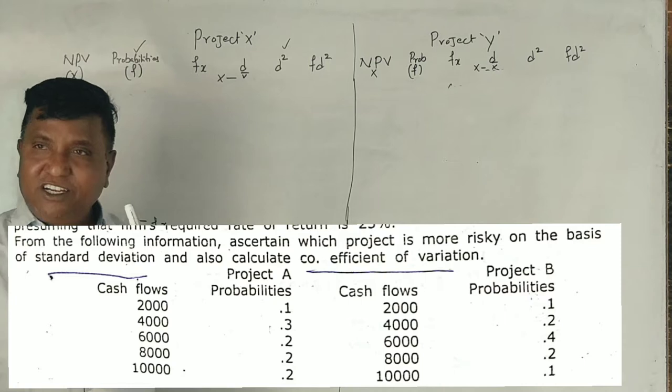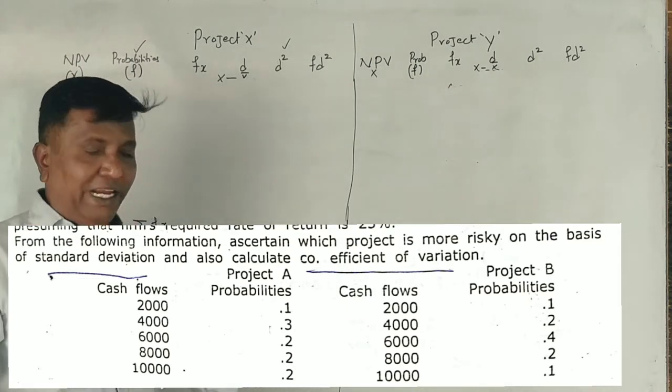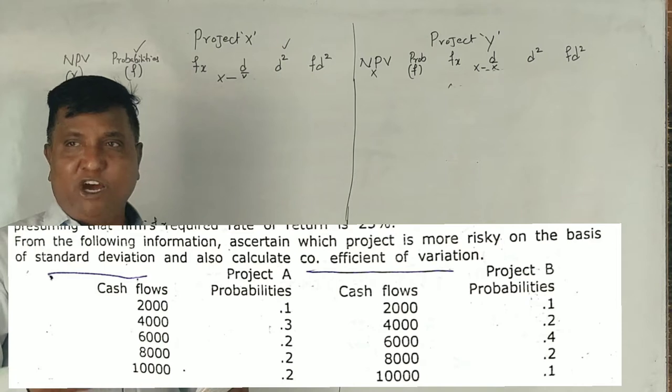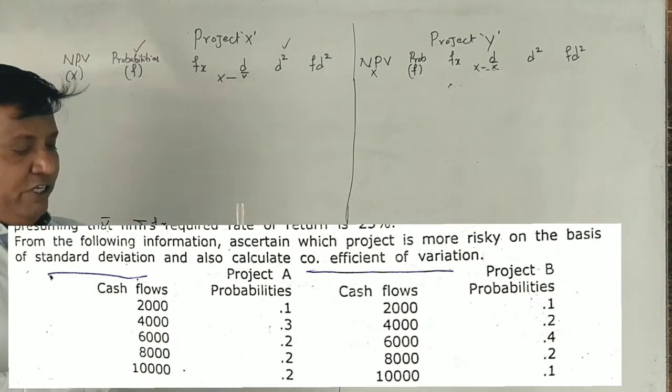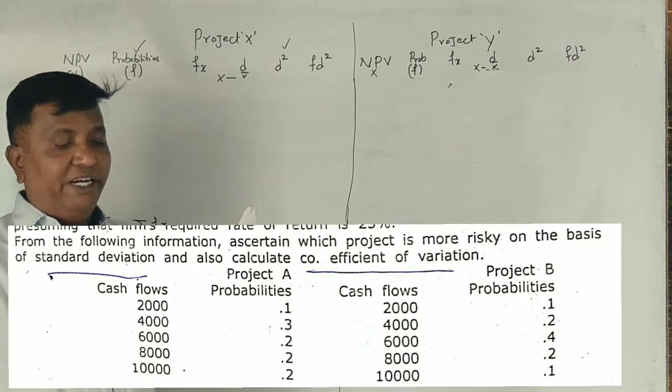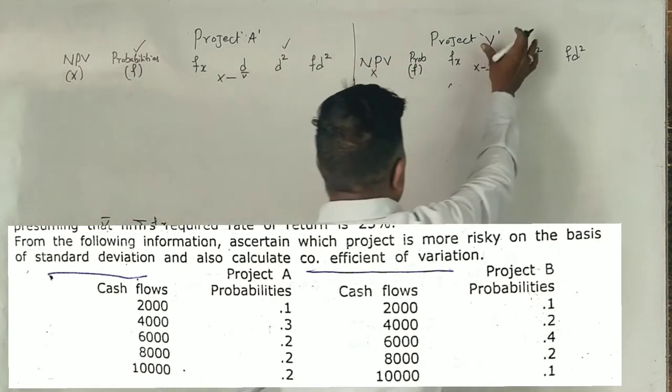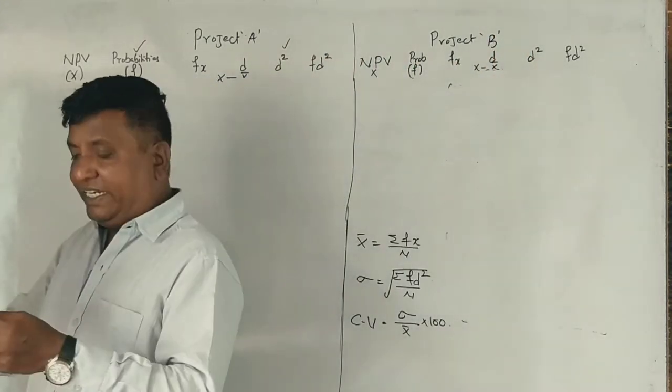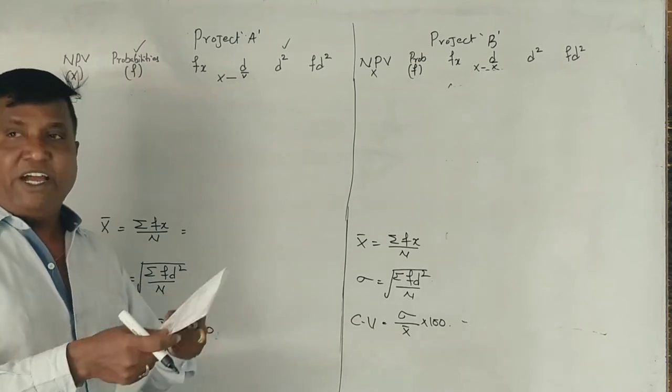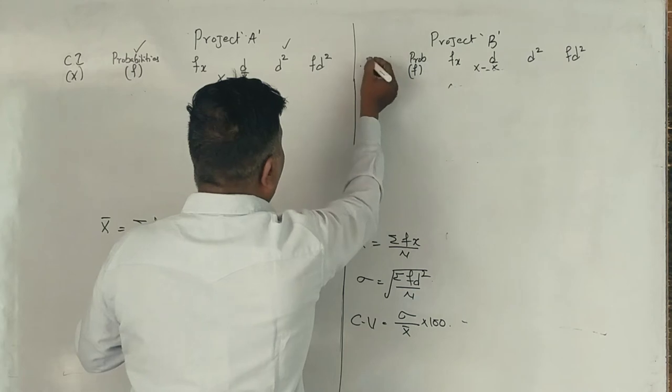Investment decisions and risk analysis using standard deviation and coefficient of variation. From the following information, ascertain which project is more risky based on standard deviation and coefficient of variation. Project A and Project B. Both projects have five years of information, with Net Present Value cash inflows.